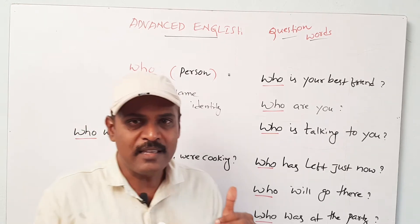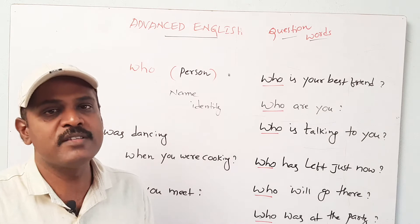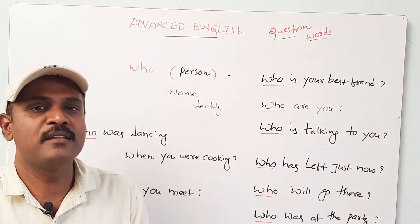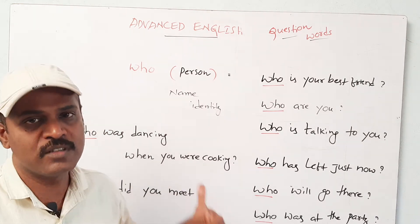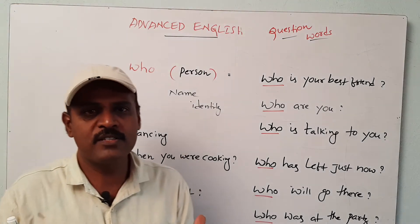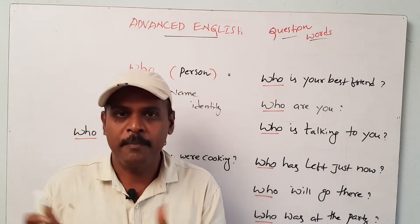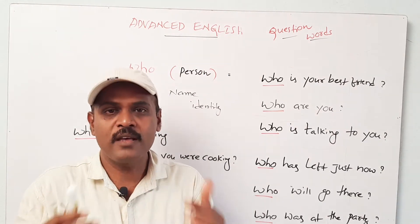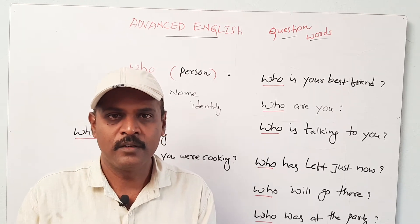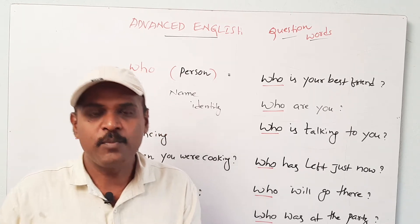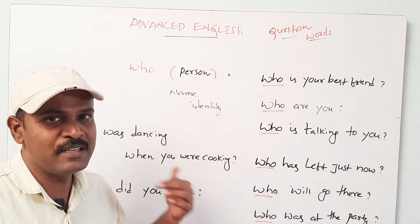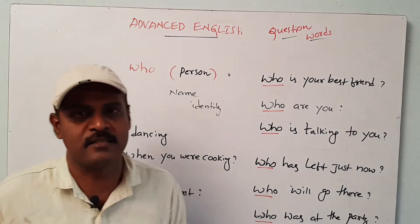So in this lesson, without wasting your valuable time, I'm going to explain the first question word, that is 'who'. Usually 'who' refers to a person. When we are asking someone's name or identity, this question word is used in all tenses.